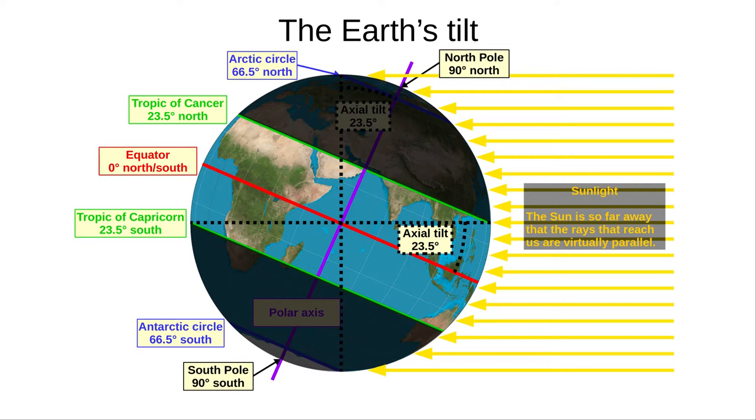On the Tropic of Cancer, at midday, the Sun is directly overhead. As the Earth revolves around the Sun, different latitudes on Earth will see the Sun directly overhead at midday, but only locations between the Tropic of Cancer and the Tropic of Capricorn. At the equator, daytime and nighttime are both 12 hours long throughout the year.